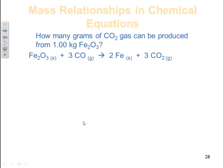How many grams of CO2 gas can be produced from 1.0 kilograms of iron 3 oxide? Now notice it doesn't tell us anything about carbon monoxide there, so we assume that's an excess. So the limiting factor we're assuming is the iron 3 oxide.